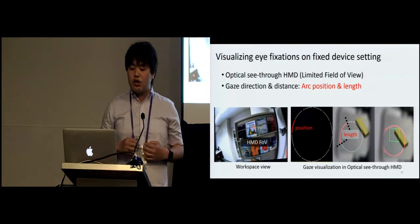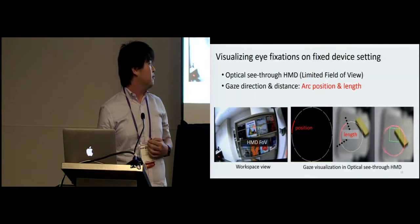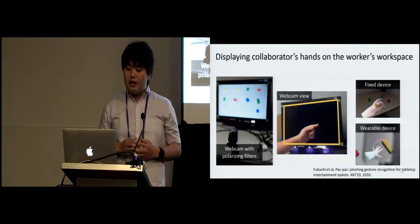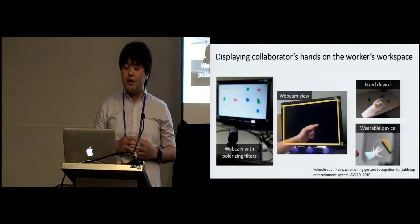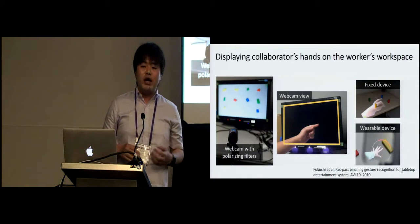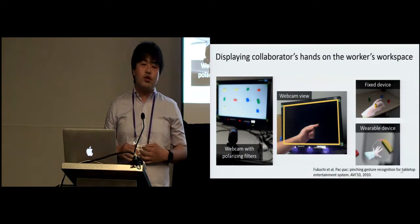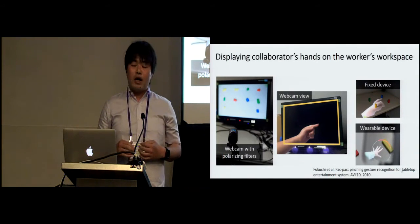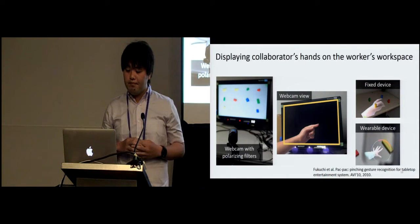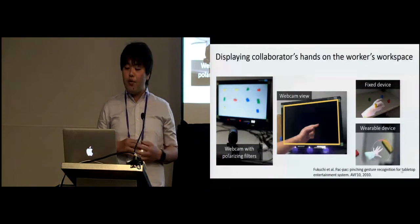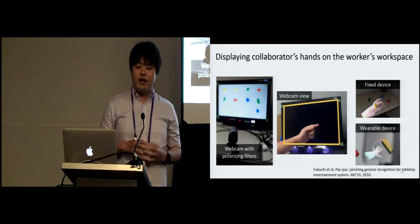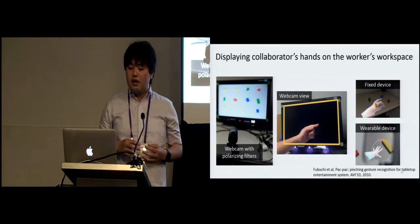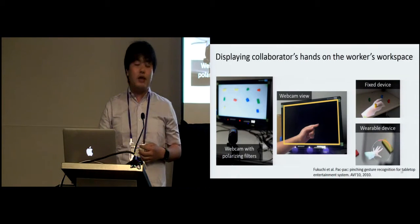The green circle shows the exact gaze position. The collaborator's hands are displayed on the worker's workspace. This is done by using a polarizing filter attached to the camera on the worker's side. The polarizing filter blocks all lights from the display while the camera can see the collaborator's hand. The captured hand regions are projected on the worker's workspace.